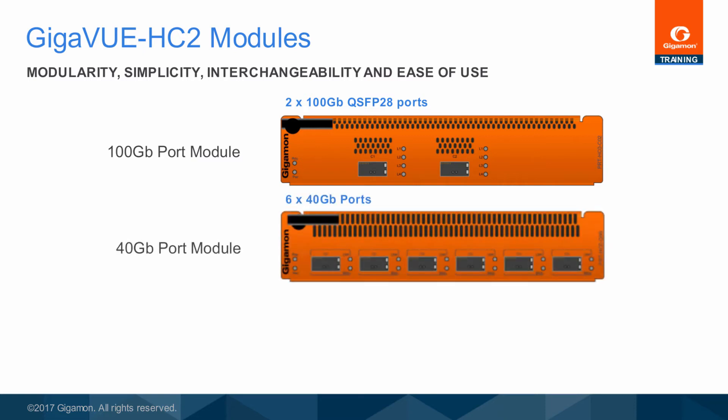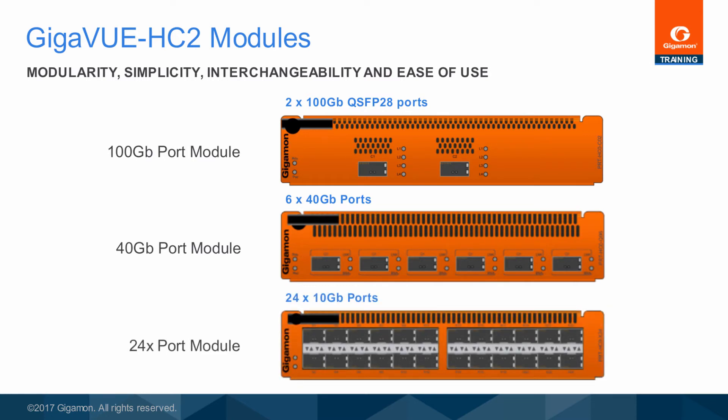The next module is a 6x40 gigabit Ethernet module supporting QSFP+ transceiver modules. The third general-purpose module is a 24x10 gigabit module. Each of the ports shown for 100 gigabit, 40 gigabit, and 10 gigabit, as well as the 10 gigabit ports on the GigaSmart module and the SFP-plus ports on the Combo Inline Bypass module, can be used for network ingress, tool egress, logical inline bypass, or stacking ports. Gigamon does not restrict the ways in which you can choose to use these ports. Additionally, all of the Gigaview HC2 10 gigabit SFP-plus ports also support 1 gigabit SFP transceiver modules.